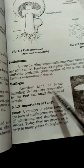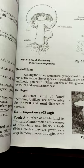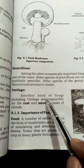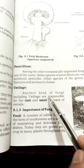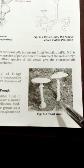Ustilago is another kind of fungi. Ustilago and similar fungi are responsible for rust and smut diseases of cereals — meaning grains like rice and lentils. They destroy crops and cause great agricultural damage. The toadstool is a poisonous mushroom — not all mushrooms are edible.